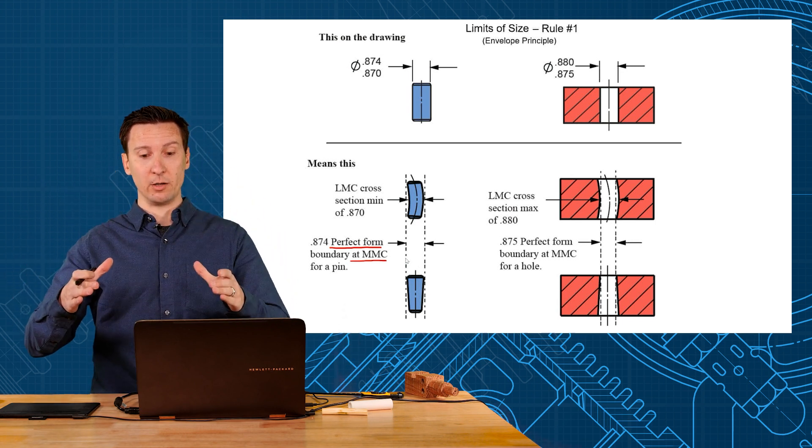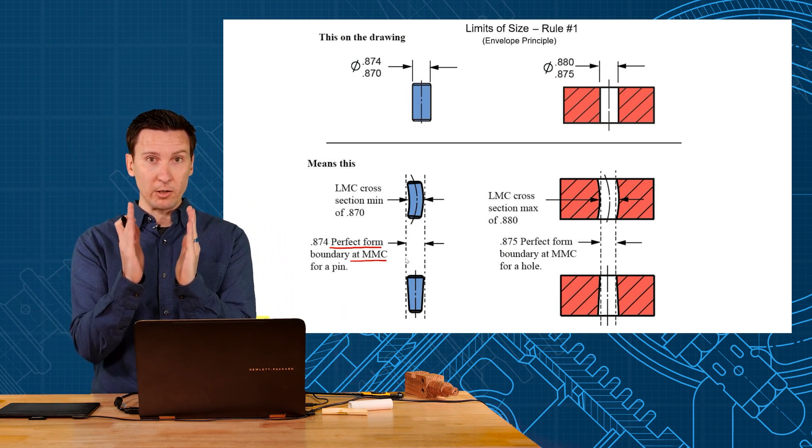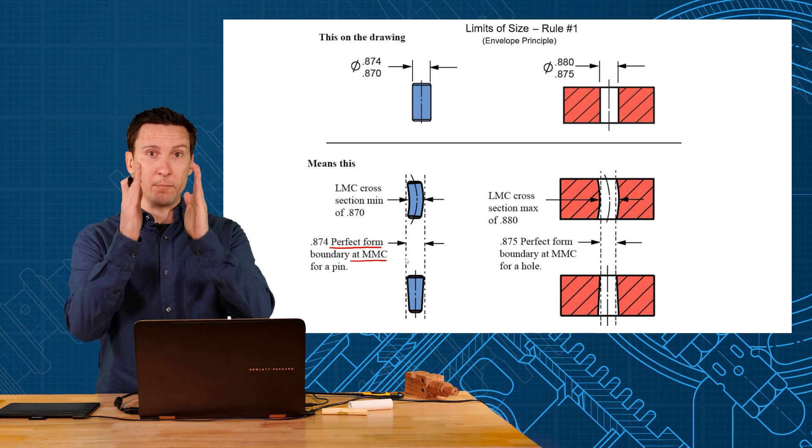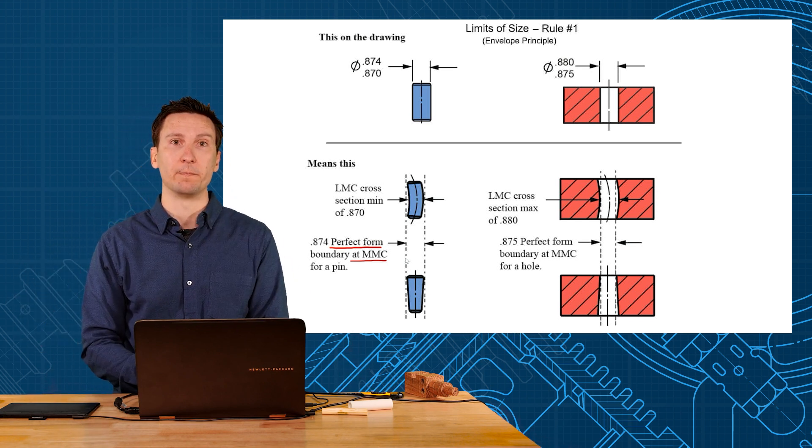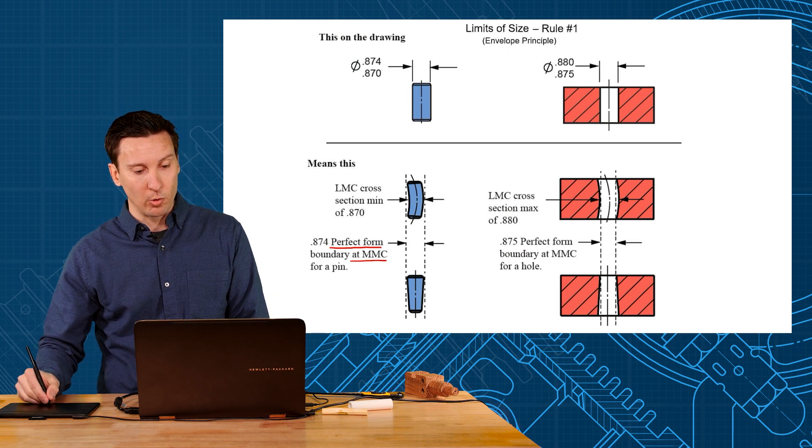Now as its cross-section gets smaller, then it can bow or bend by that amount, but it cannot violate that MMC perfect form boundary.